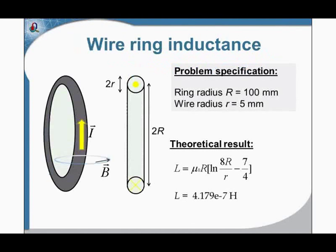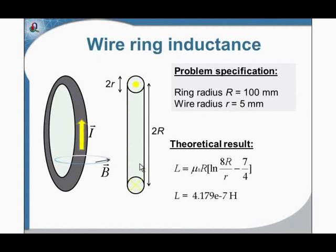Now let's start with the first example: the ring inductance. There is a ring of thin wire; the ring radius is 100 millimeters and the wire radius is 5 millimeters. There is some current flowing in the ring and the task is to find the inductance of the ring. This case has a simple analytical solution — you can see the equation on the screen — and this formula gives accurate results if the wire is thin compared to the ring radius. Now let's simulate this case in QuickField.